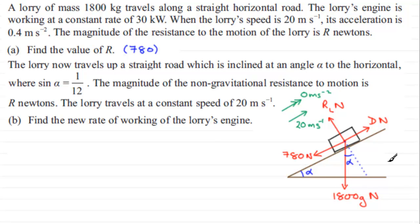So when we're asked to find the new rate of working of the lorry's engine, we've essentially got to work out that power that the engine is working at. So to do this, I'm going to be thinking that power is equal to the driving force times the velocity here of 20. Problem is, I don't know what D is.